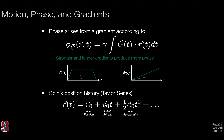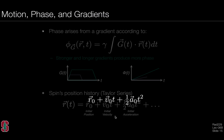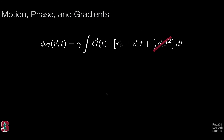The spin's position history can be expanded through a Taylor series. We think of this vector expression as the position vector as a function of time, which depends on the initial position of the spin, but also on the initial velocity and the initial acceleration of the spin. This is a generalized expression for a spin's position history. Using this in the phase equation, the phase arising from a gradient depends on the gradient waveform dotted with the initial position, the velocity times time, some acceleration terms, and even higher order terms. For the most part in MR, these higher order terms are quite small and can be ignored.